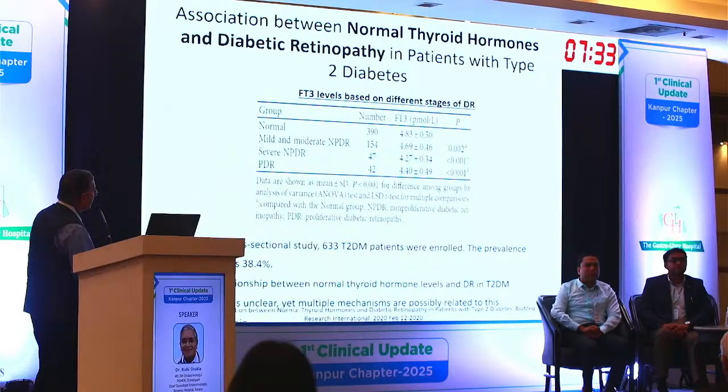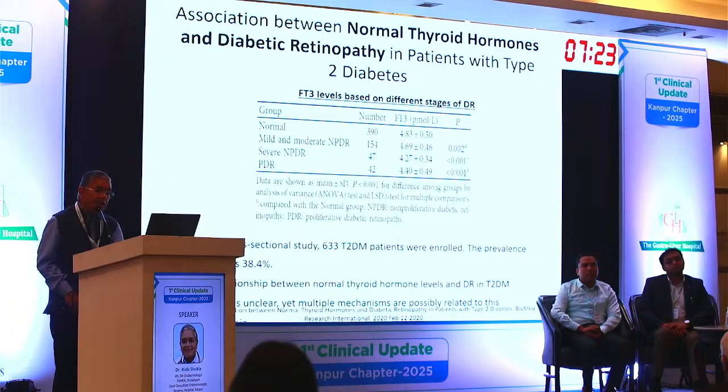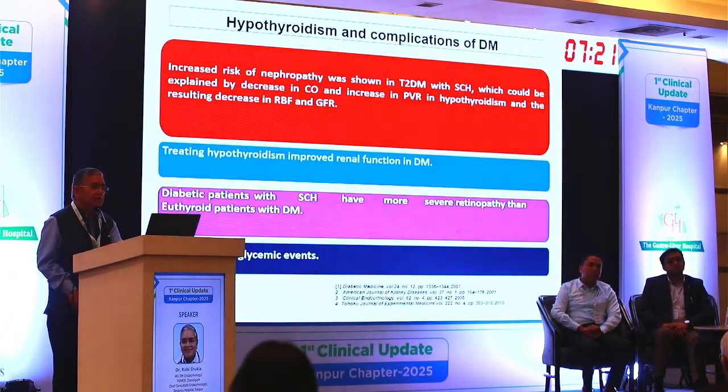In diabetes with a hyperthyroid individual, what happens is that glycemic control worsens, and classically it is a post-meal hyperglycemia. Another important thing is increased incidence of diabetic optic retinopathy. Hyperthyroidism is gradually going down but as the FT3 has gone down, the retinopathy worsens — so there is some relationship between retinopathy and thyroid disorders.